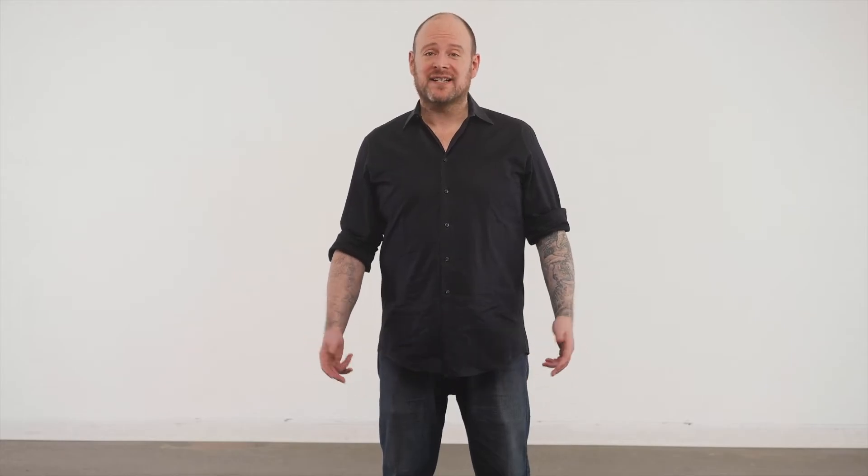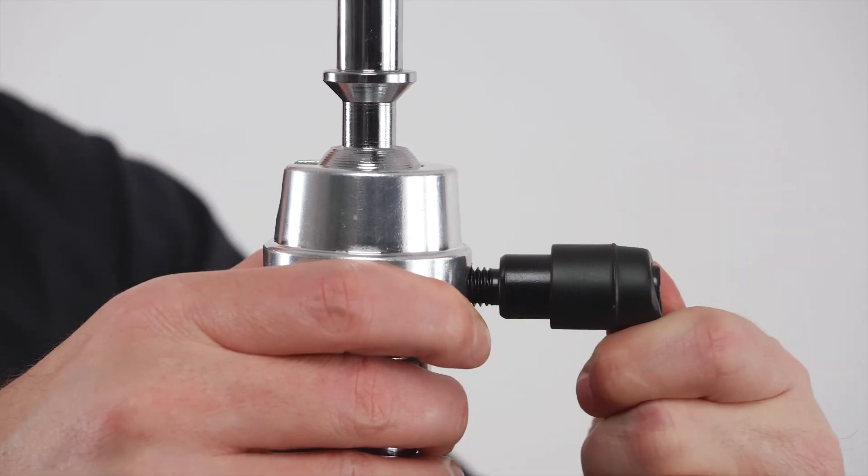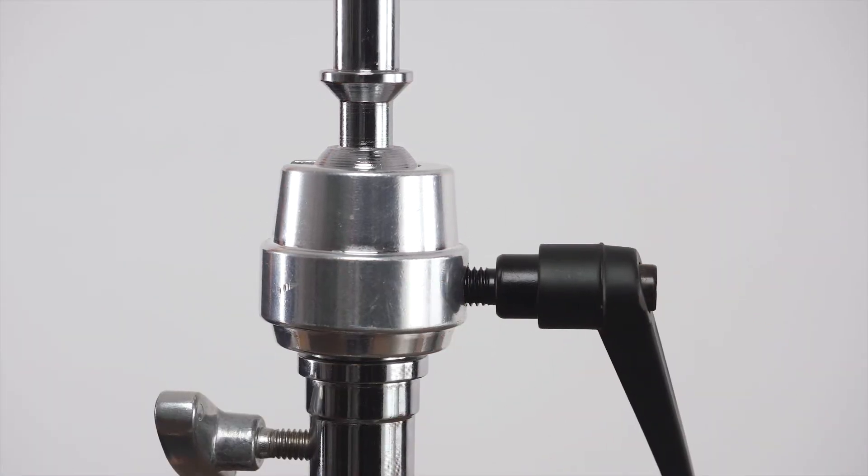The black handle can easily be repositioned or ratchets by pulling it away from the collar, rotating it where it's comfortable, and releasing it in that position.